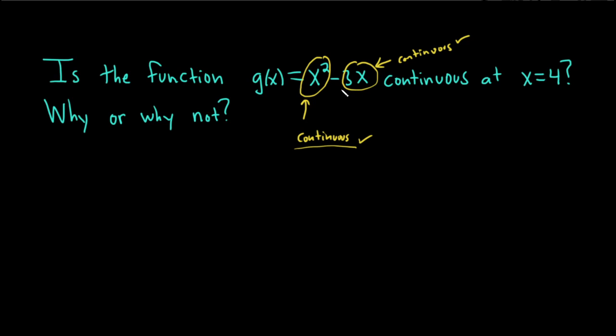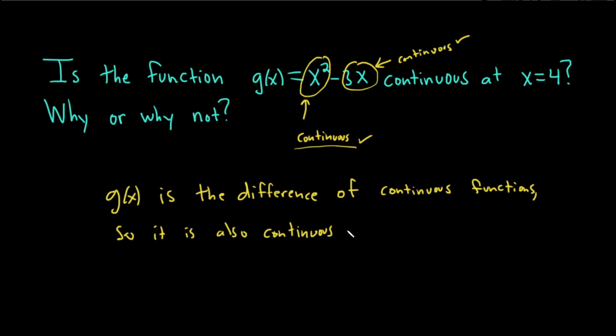And then g of x is basically the difference of continuous functions. So g of x is the difference of continuous functions. So it's also continuous everywhere.